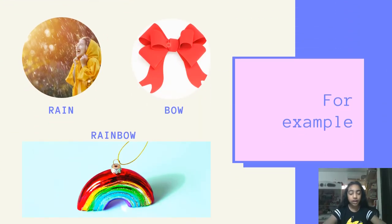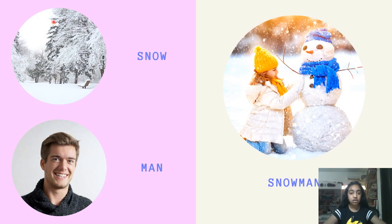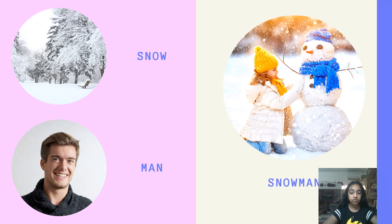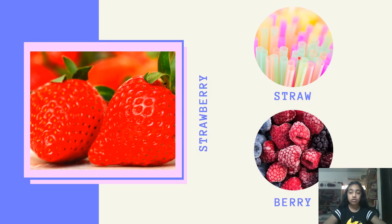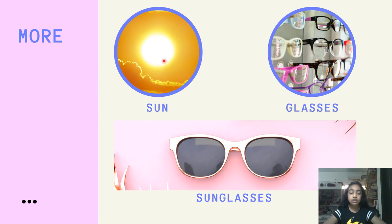For example, rain and bow are two separate words with their own separate meanings. When we combine them together, it makes rainbow. Snow and man make a new meaningful word when combined together, which is snowman. Straw and berry make strawberry. Sun and glasses combine together to make sunglasses.